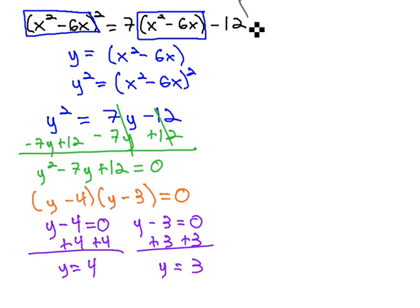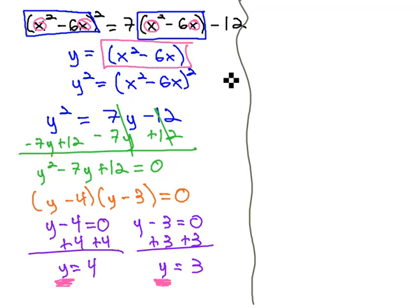However, this problem did not ask us to solve for y. This problem wants us to solve for x. To do that, we're going to substitute and replace both of these y's in y equals 3 and y equals 4 with what y equals: the equation x squared minus 6x.